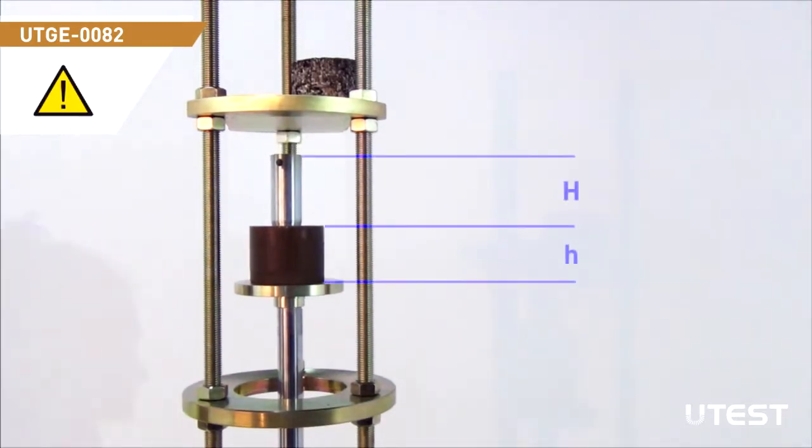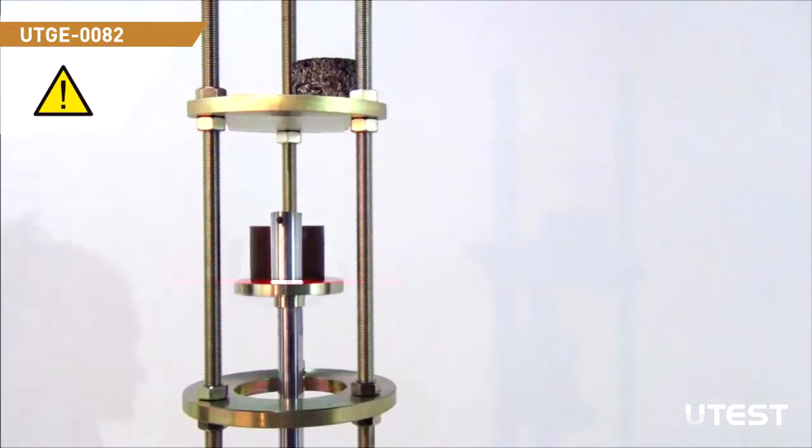If the height of the sample is shorter than the height of the cutter, the operator may not estimate when to stop because the cutter will be embedded to the sample. This may result in a stuck cutting collar and a damaged sharp edge.